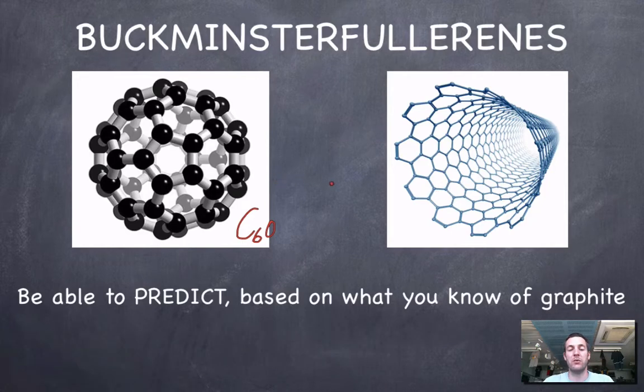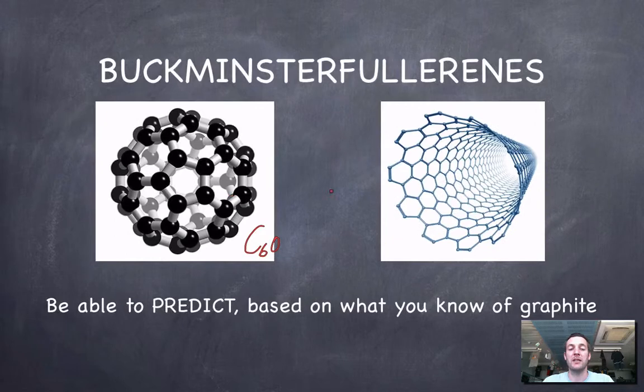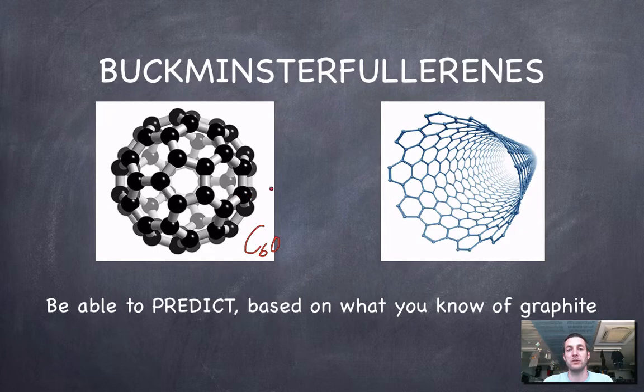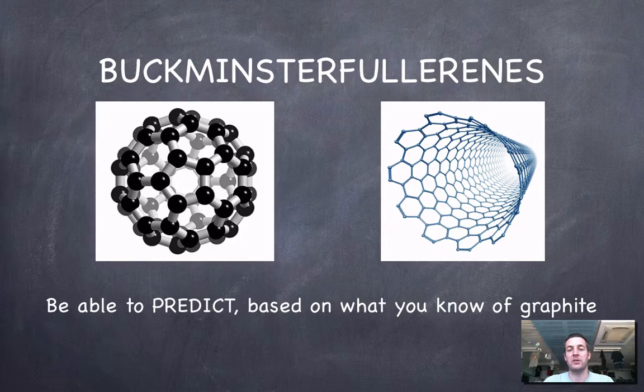We ought to be able to look at these and say it's going to have a high melting point because it's got covalent bonds between all the atoms and they're very hard to break. Is it going to conduct electricity? Yes, I would expect it to because it's not using all its electrons in bonds and so there'll be delocalized electrons. Once again we are using our knowledge of graphite to try and explain what these might behave like.